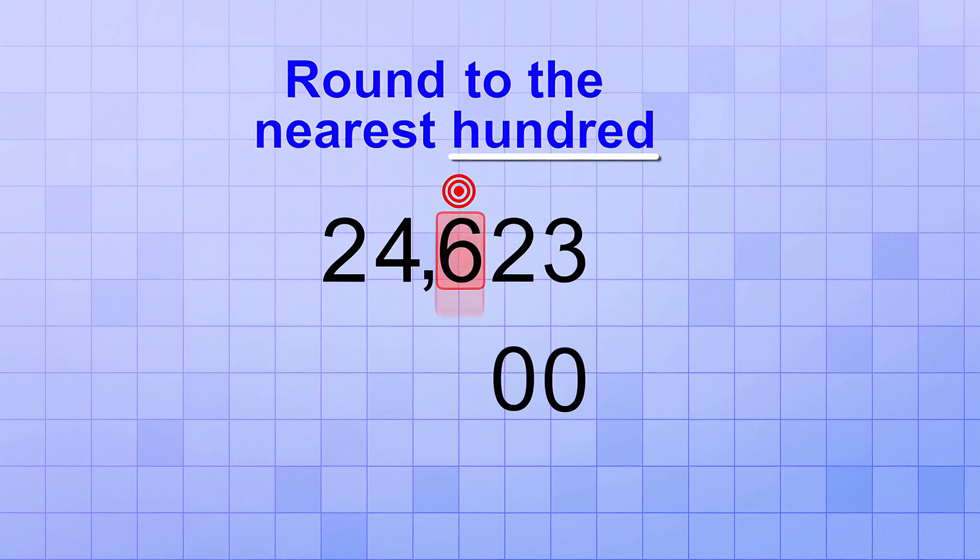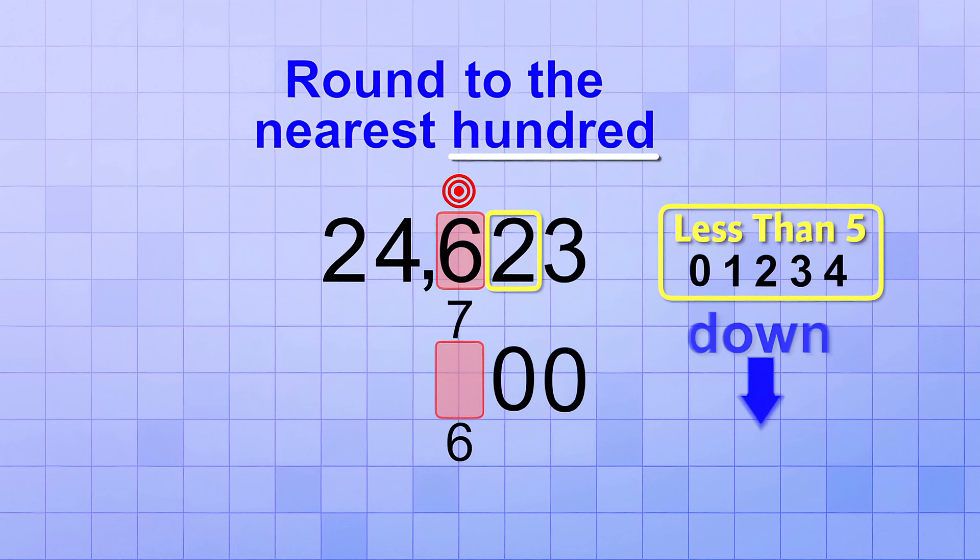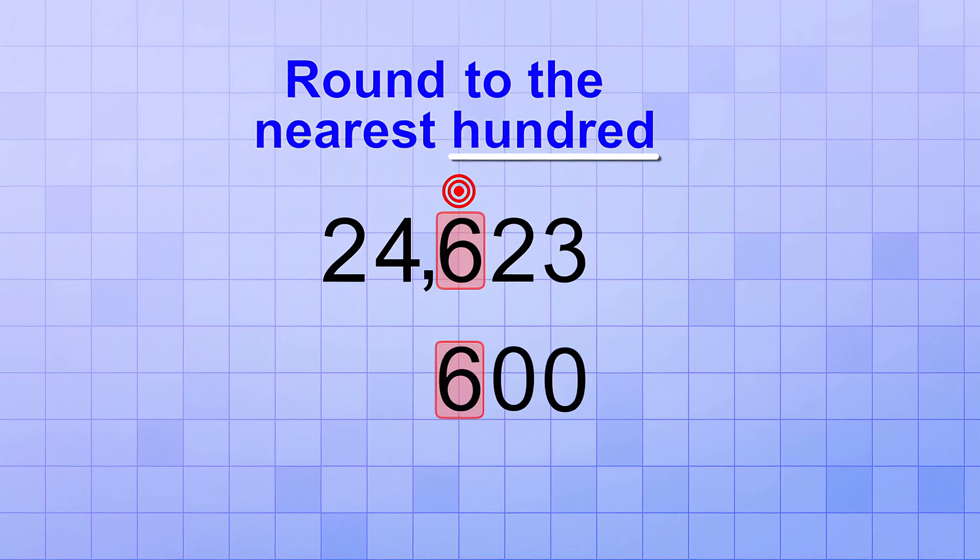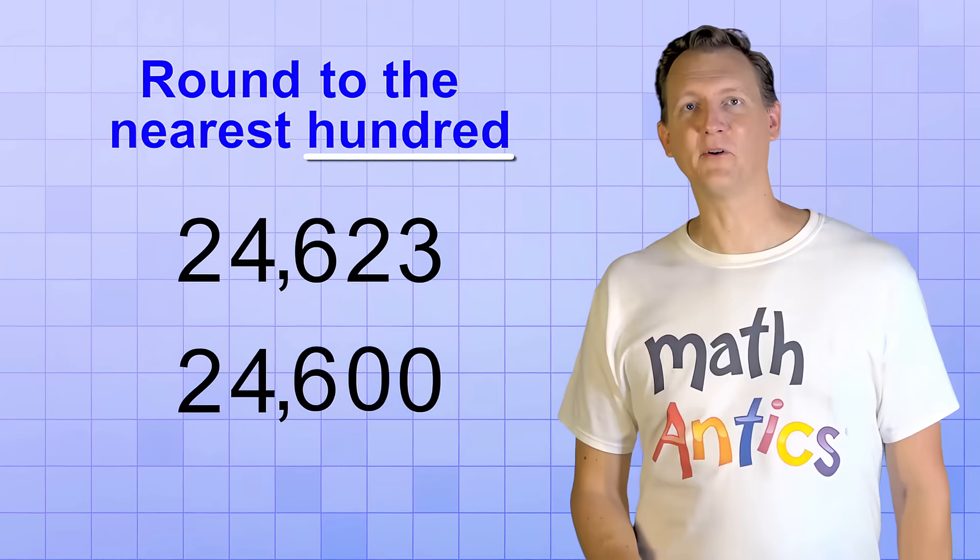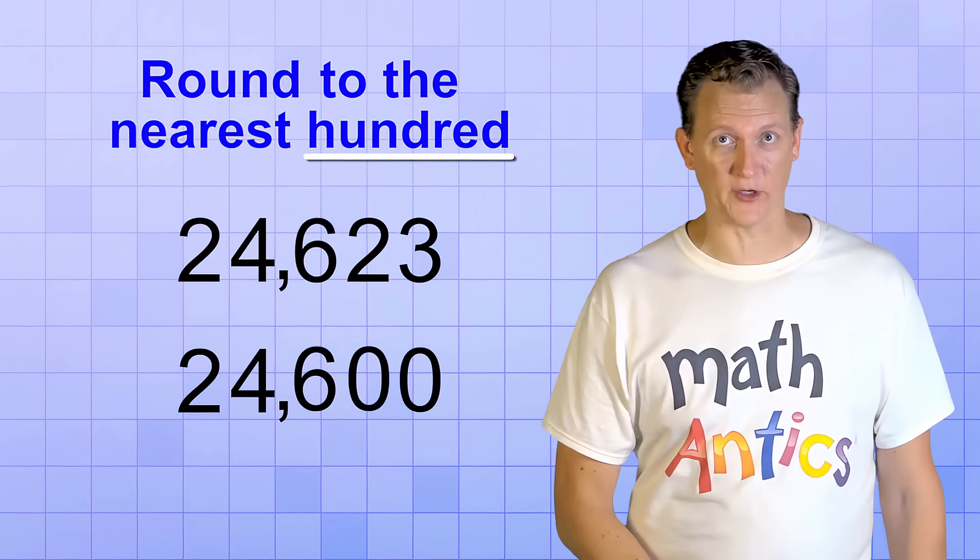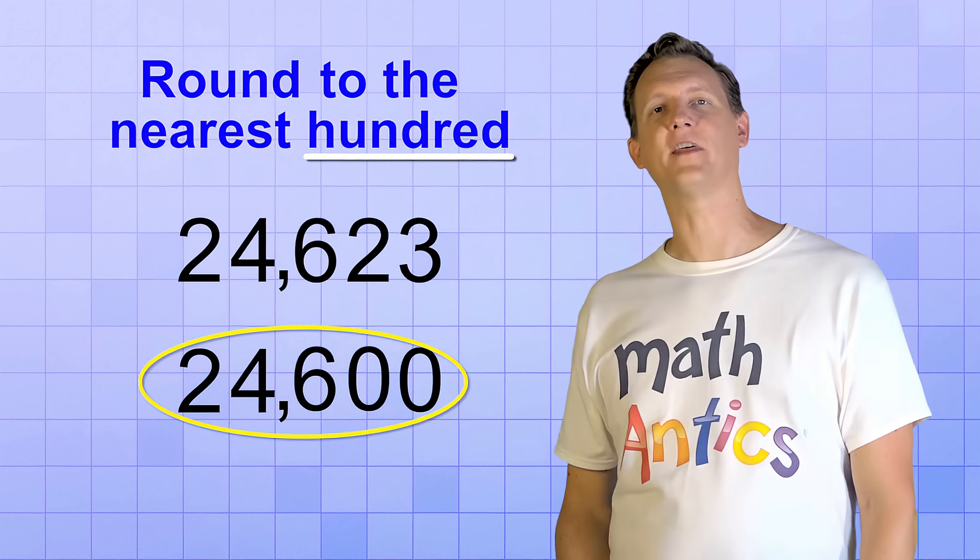Next, let's decide what to do with the target digit. We either keep it the same, or we increase it by one. To decide, we look at the value of the next digit to the right. Since that digit is only a 2, which is less than 5, we round down, which means that we'll keep the target digit the same in the rounded number. Last, we just keep all the digits in bigger number places the same in the rounded version. There, we've rounded the original number to the nearest hundred and the answer is 24,600.